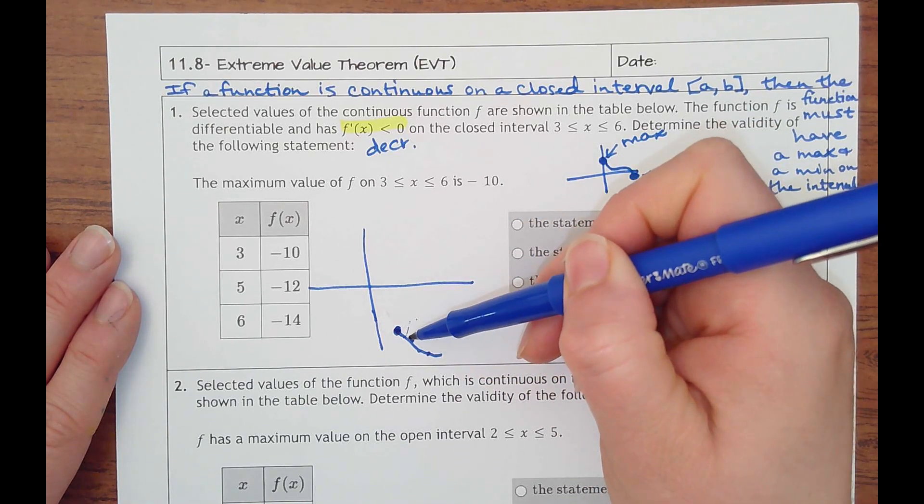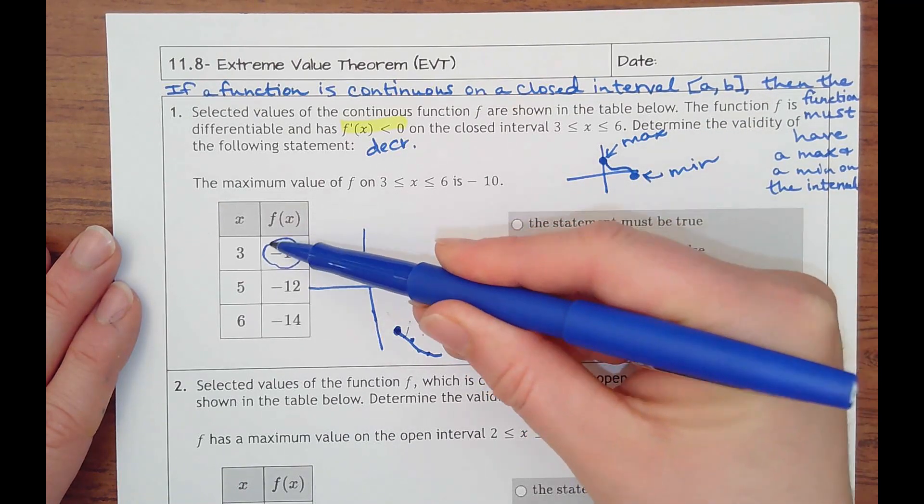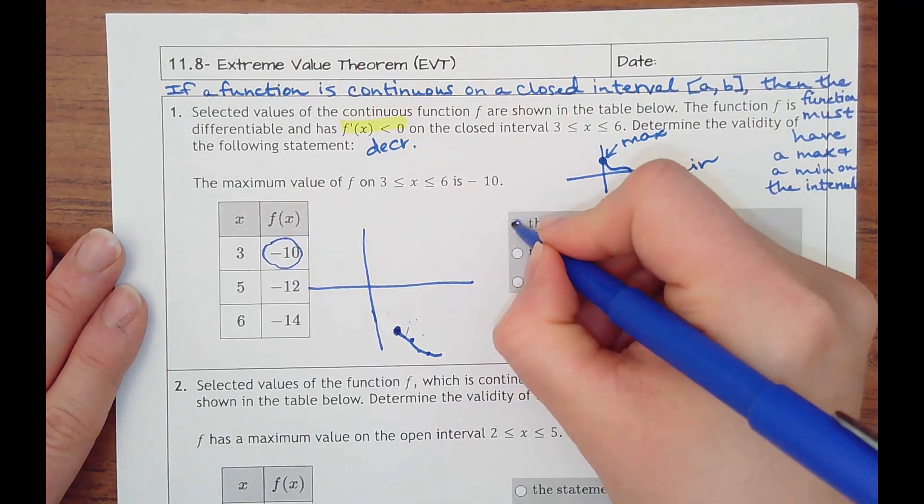But because it tells me this is always decreasing and never going up any higher, yes, negative 10 must be the highest point. Must be true.